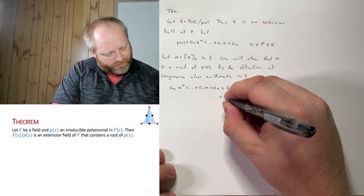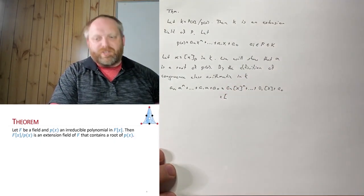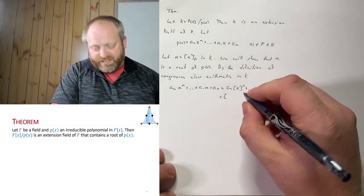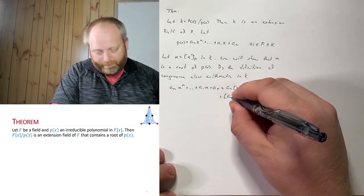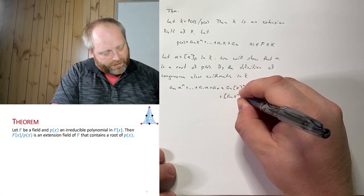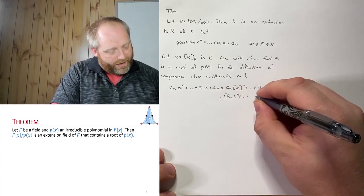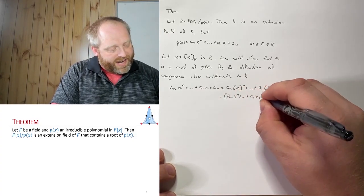So what this is equal to is now instead of each term, it's just going to be one term. So this is now the congruence class of a_n x^n plus all the way down a_1 x plus a_0.